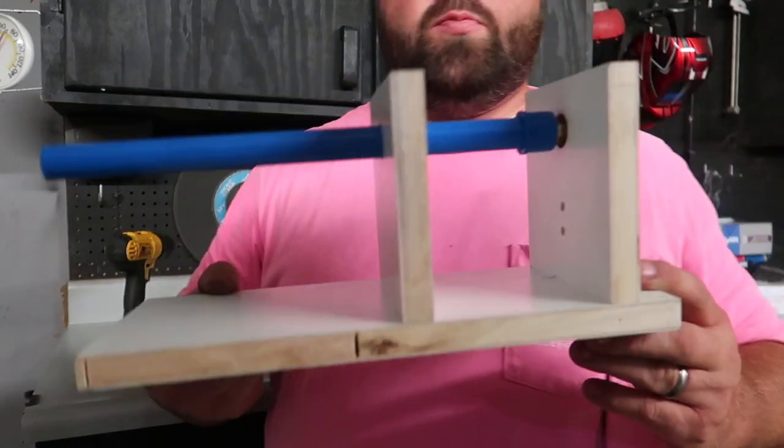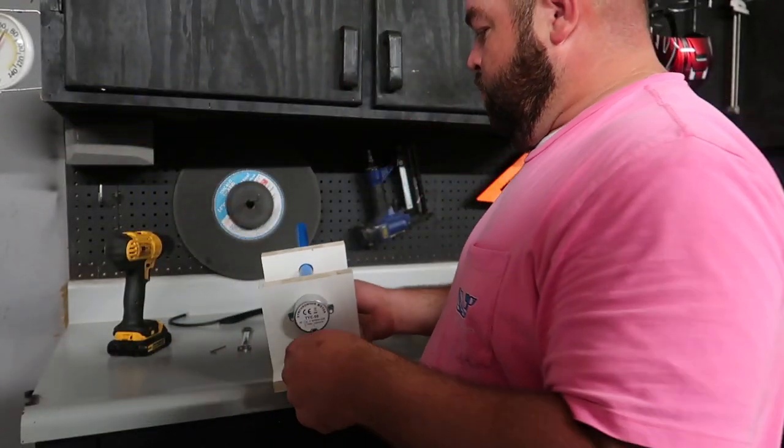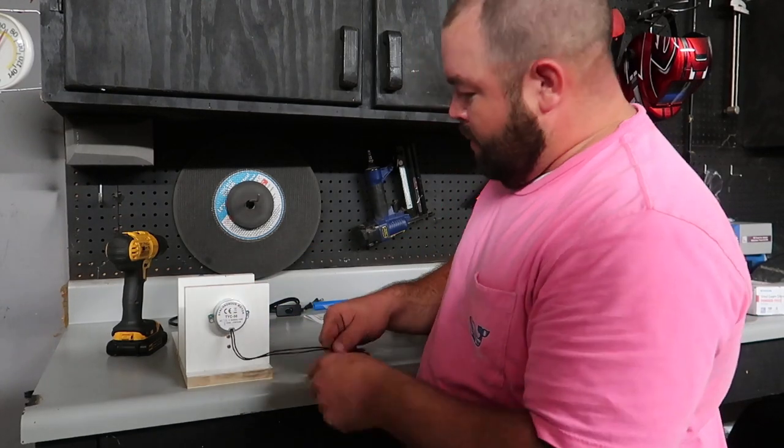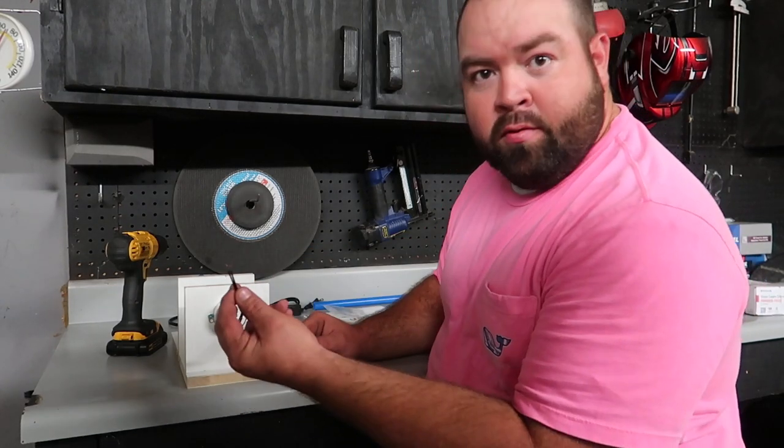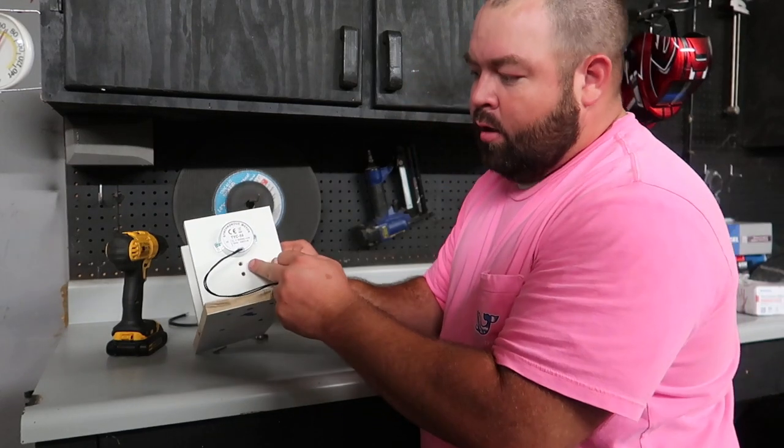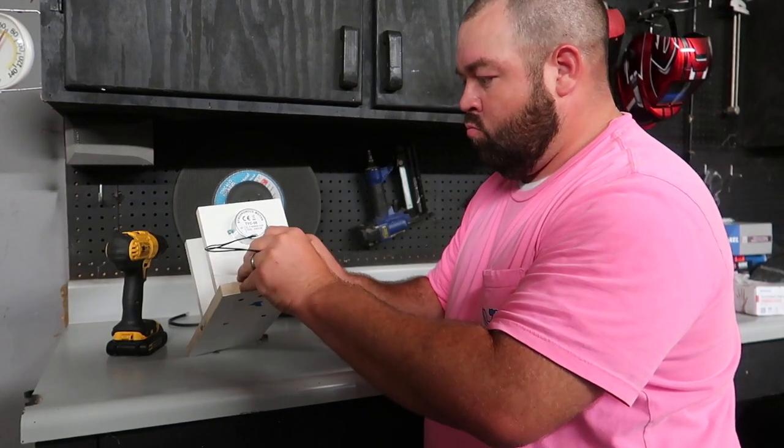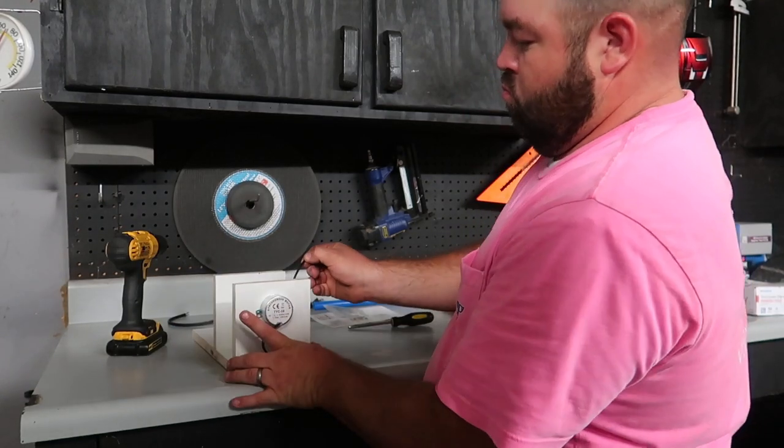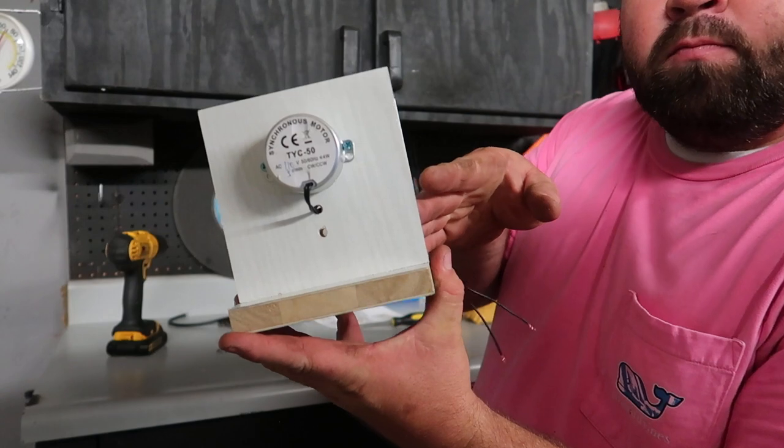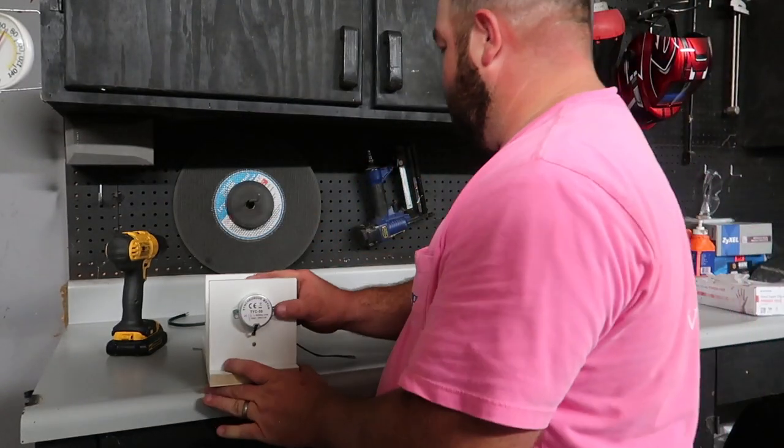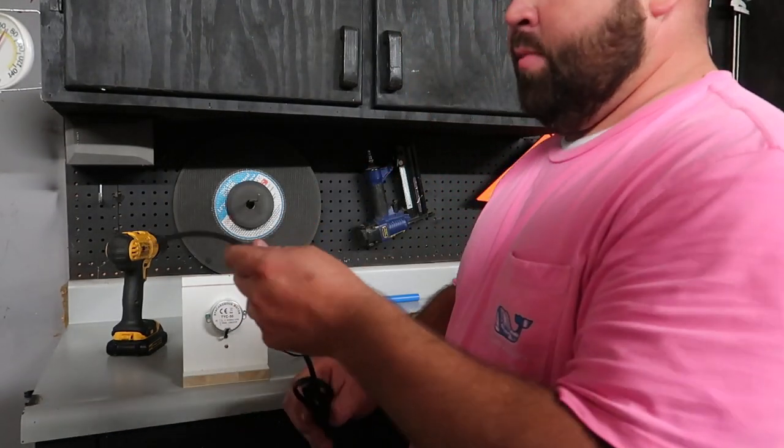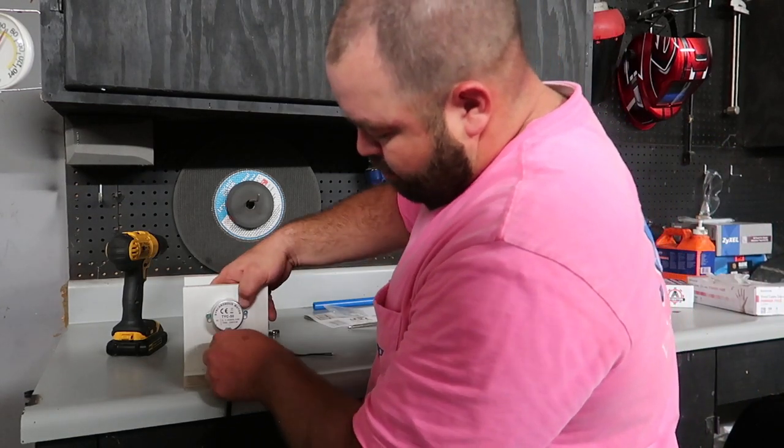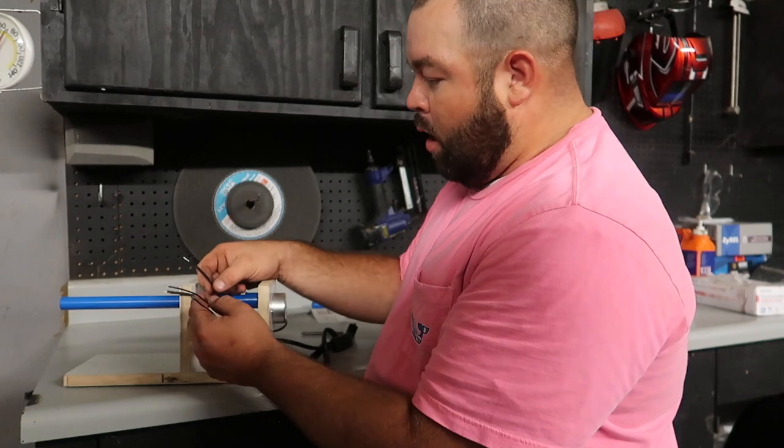So last, but not least, let's wire this thing up. So before I wire everything up, I'm going to take both of these wires here and tuck them into the upper hole here. So it looks like this right here. Next, I'm going to take this cable here and run it into this other hole right here.